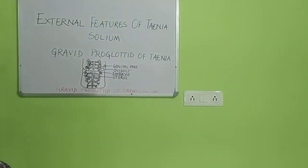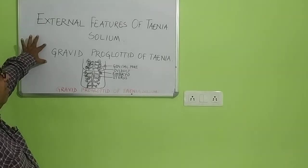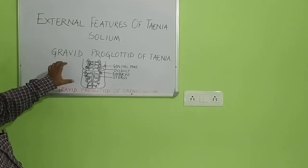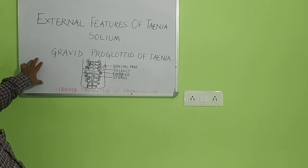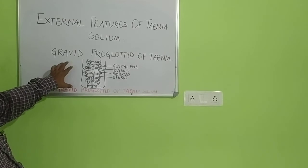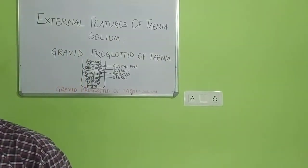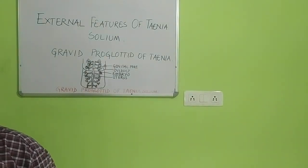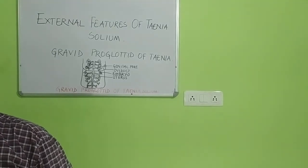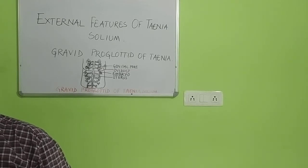Here I also mention the external features of Taenia solium, and in that context today I shall explain about the gravid proglottid of Taenia. I have already drawn a diagram of the proglottid which is available at the distal part of the organism and known as gravid proglottid. That picture of the gravid proglottid of Taenia solium is also mentioned in the white book. After fertilization, eggs are laid in numerous numbers.